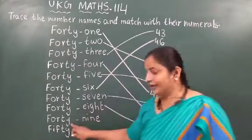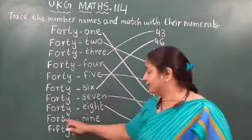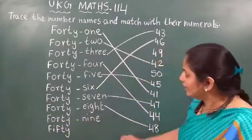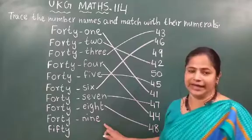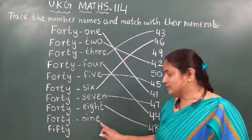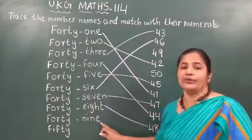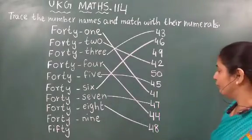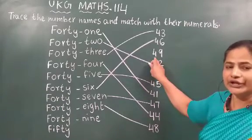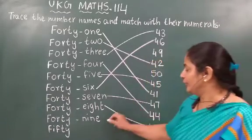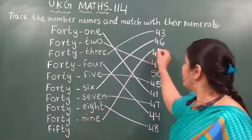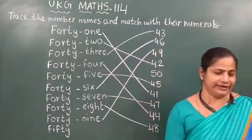After 48, which is the next number? 49. The spelling? F-O-R-T-Y N-I-N-E, 49. Now the spelling is done. Now what you have to find out? 49 — this is the numeral. Now you can match the number names with the numerals of 49.